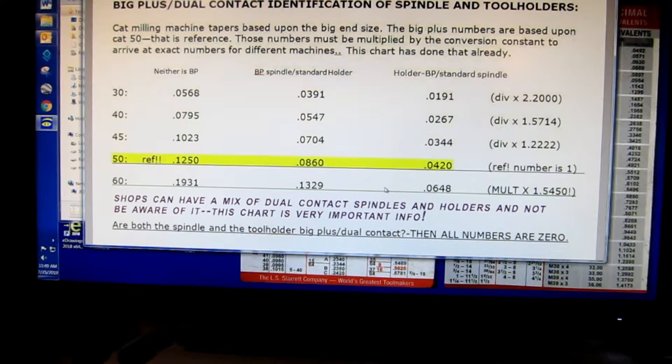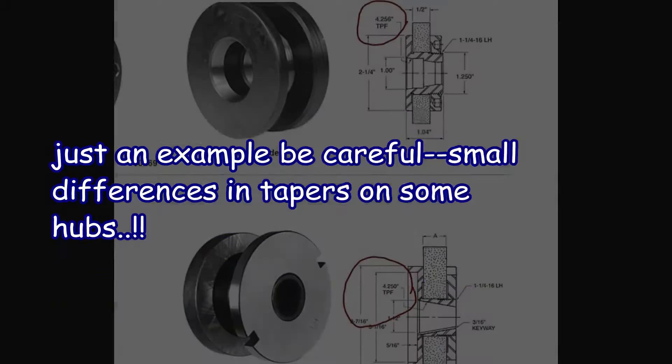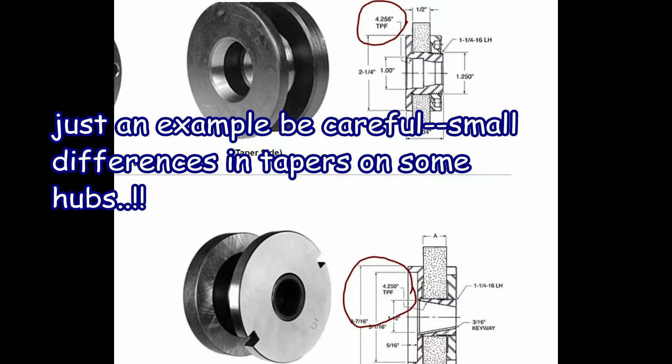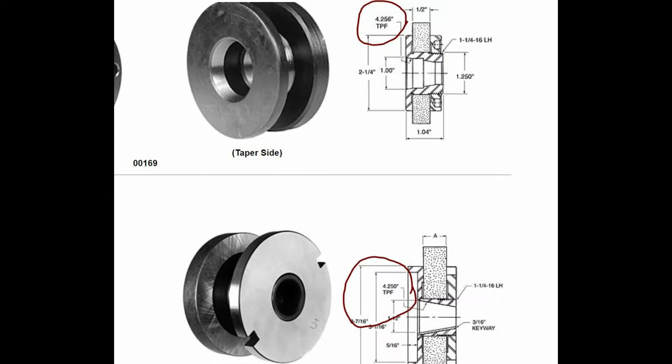Big Plus dual contact spindle. Some of them are done by Kaiser, a company called Kaiser. Anyway, look at those small differences. Six thousandths difference. Those are just obscure hubs, but I put that in there just as an example to be careful.